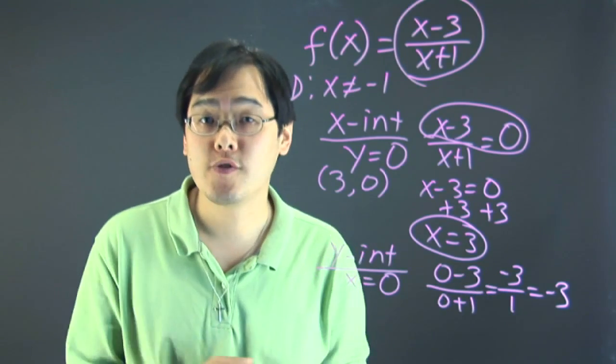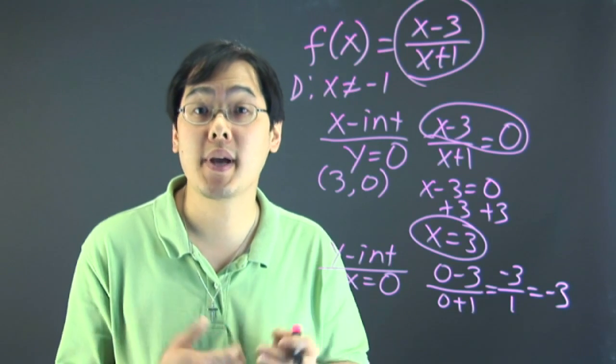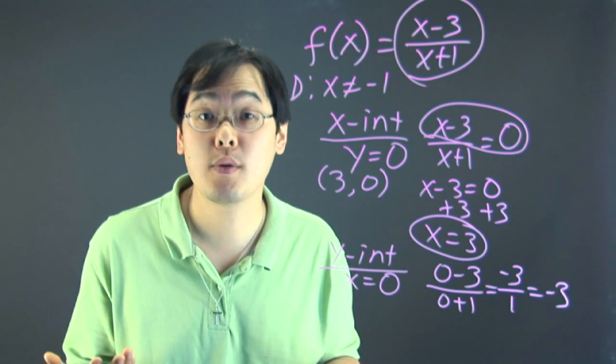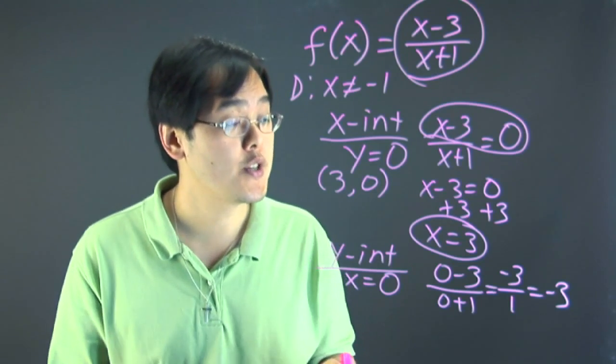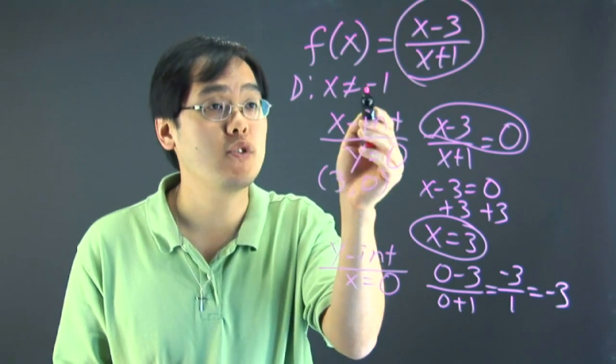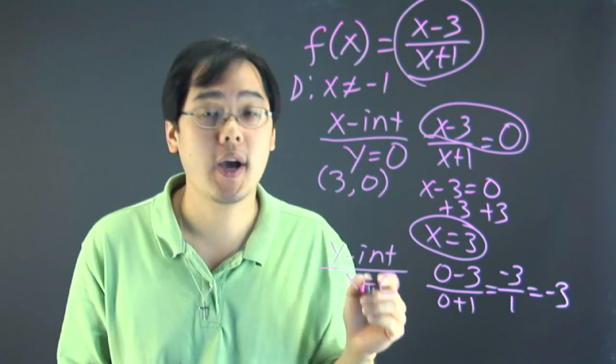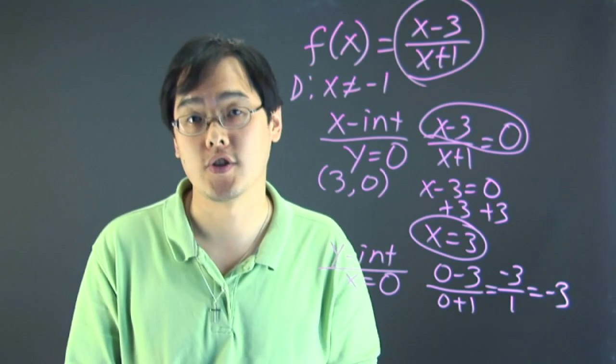Now does every rational function have these? Well some might have the x intercept, some might have the y intercept, some might have both, some might not have either one. It depends on what the situation is. But the important thing is after you establish a domain, finding the x and y intercepts are going to be very similar to ordinary functions.